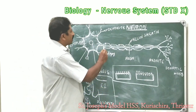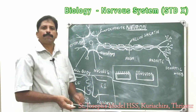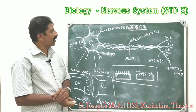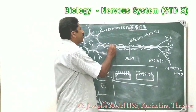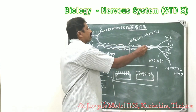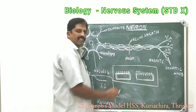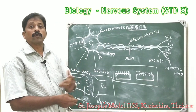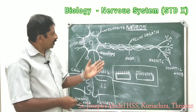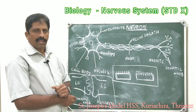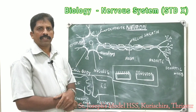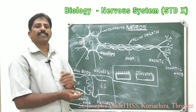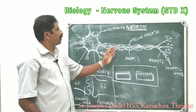The axon is covered with a sheath made of lipid, made of Schwann cells. This is called the myelin sheath. The functions of the myelin sheath are: to provide auxin and nutrients to the axon, to enhance the speed of impulse through the axon, and to protect the axon from external injury.